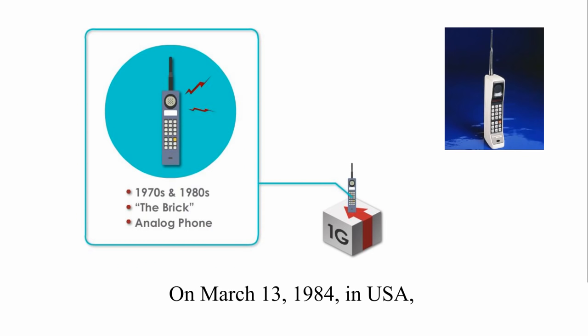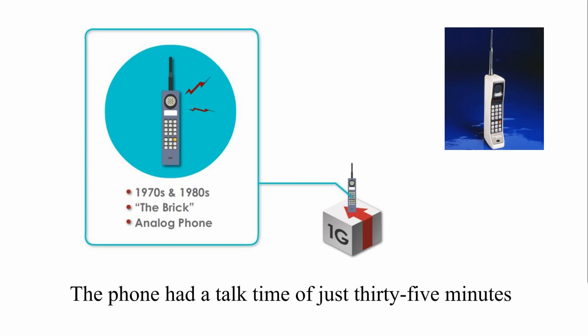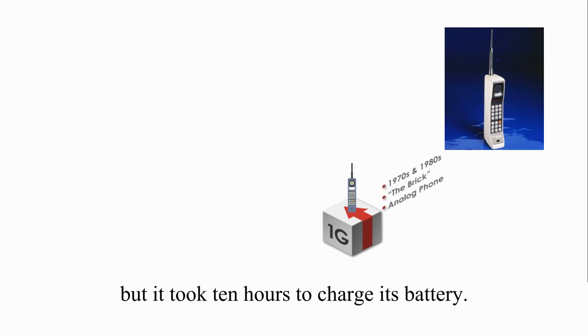On March 13, 1984 in USA, someone bought a Motorola cell phone for $3,995. The phone had a talk time of just 35 minutes, but it took 10 hours to charge its battery.